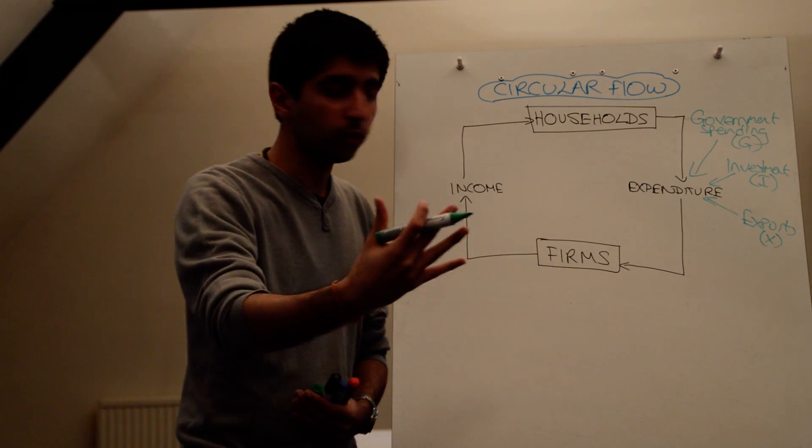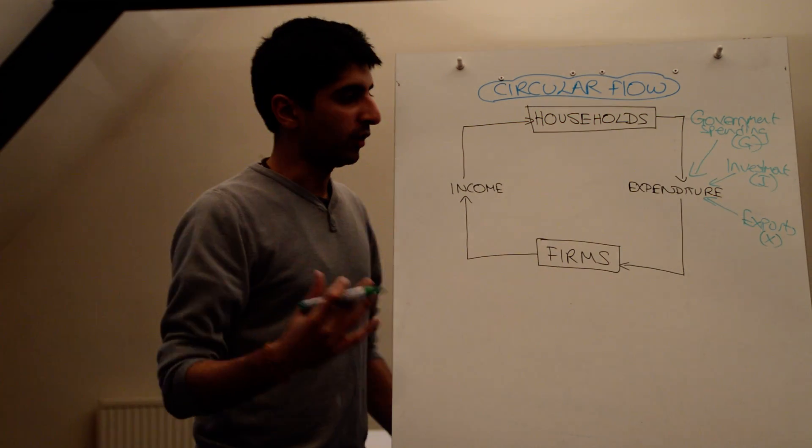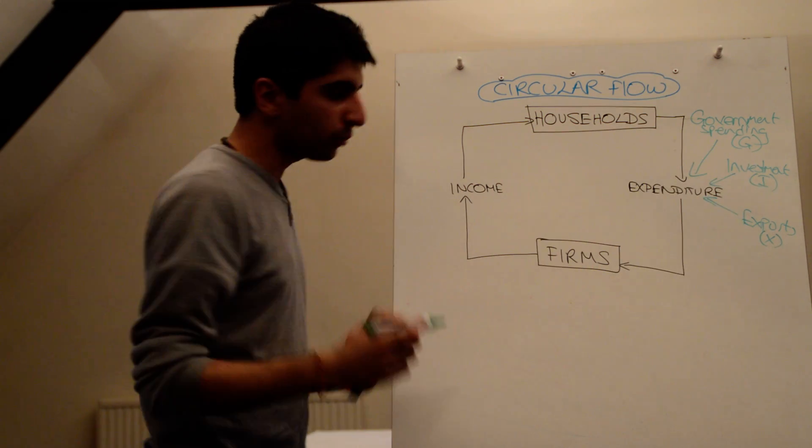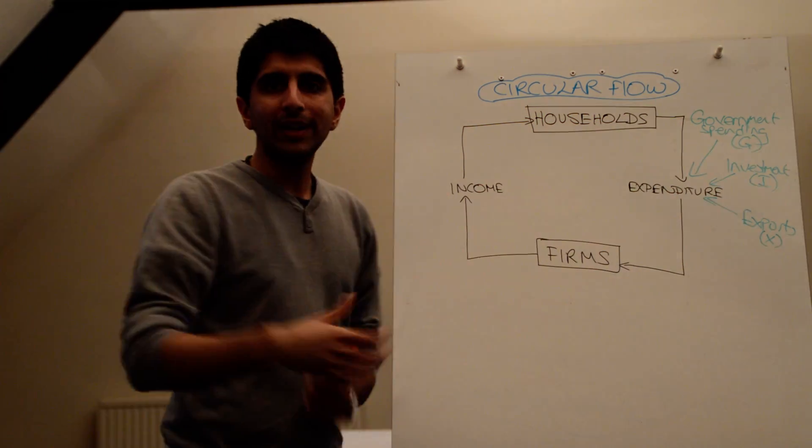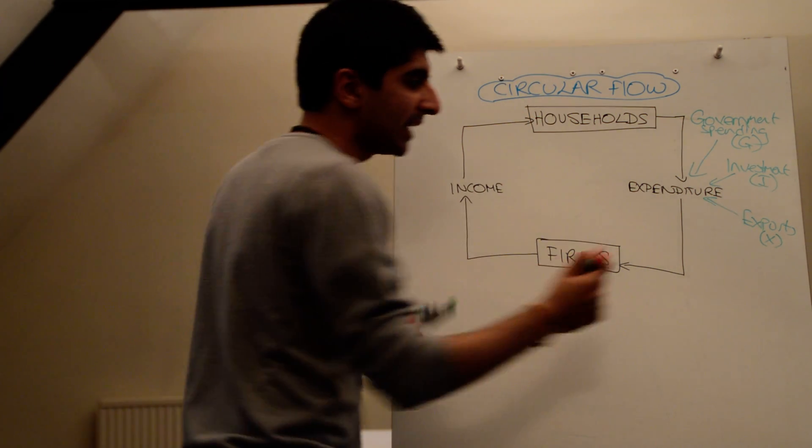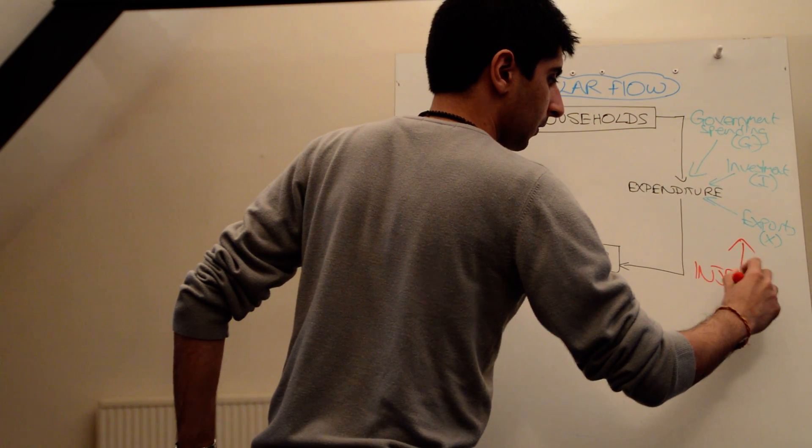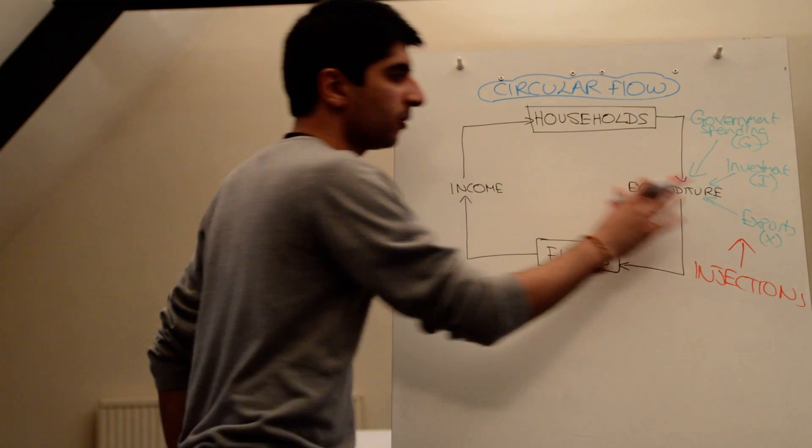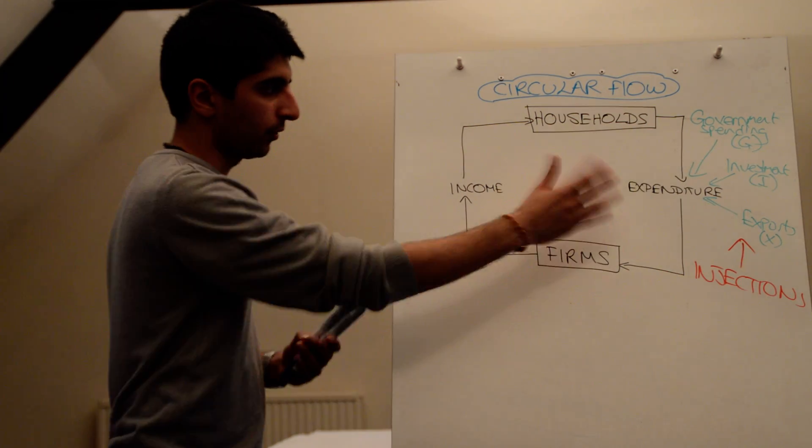So when we sell our goods abroad, money comes in, and that's export revenue. You've got all these three different types of expenditure as well, and all these three things will lead to more money coming into the economy, money entering the circular flow. They are called injections. On top of consumer spending, you've got other types of spending where money is injected into the circular flow.